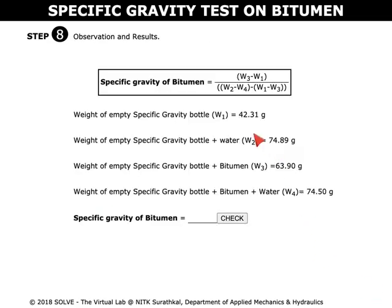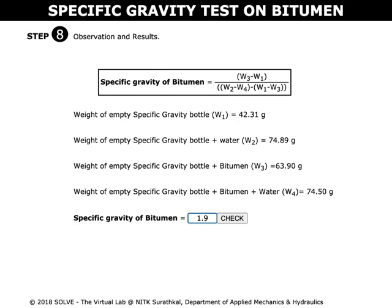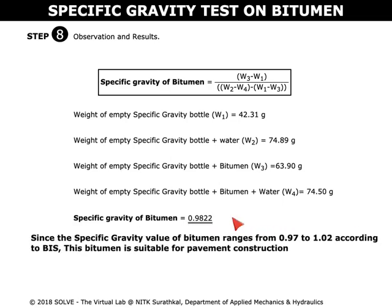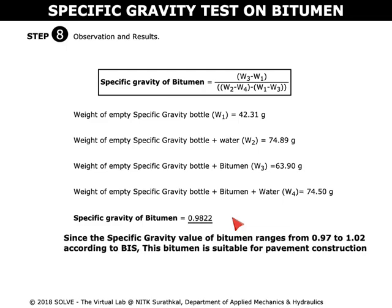These are the observations for the current simulation conducted. We can calculate the specific gravity of bitumen by using this formula. Enter the calculated value and check the result.